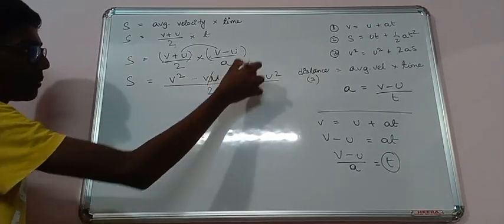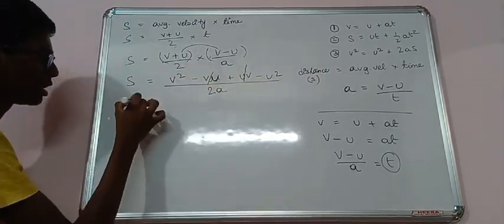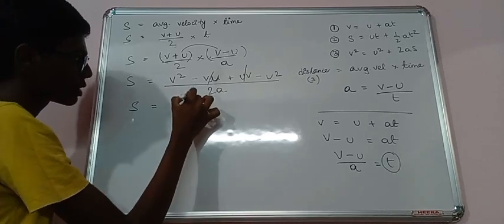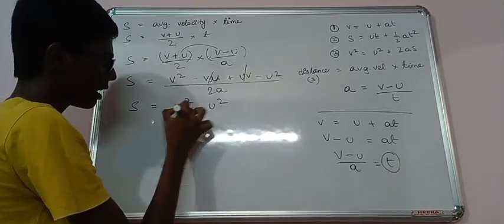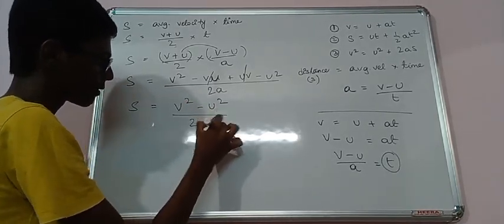Now minus UV and UV gets canceled. So S equals to V square minus U square by 2A. And we can say 2AS equals to V square minus U square.